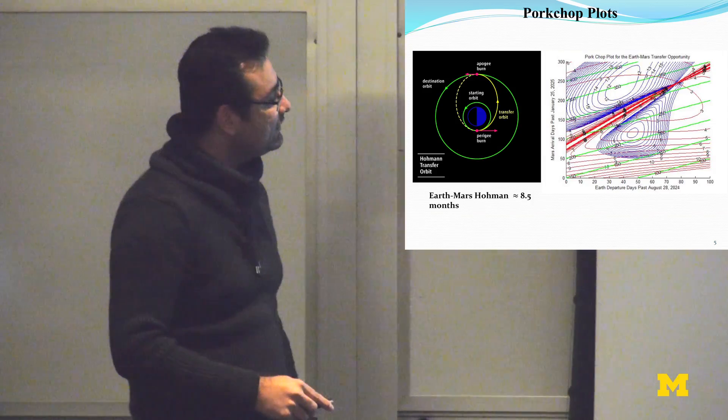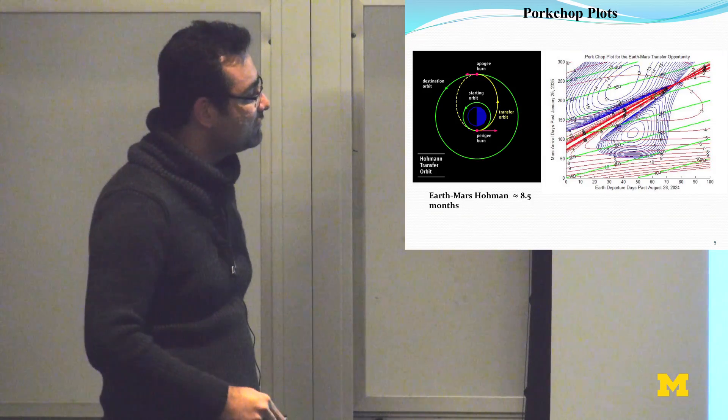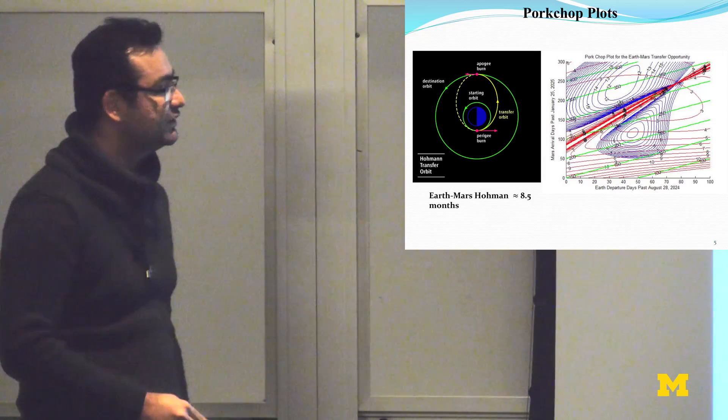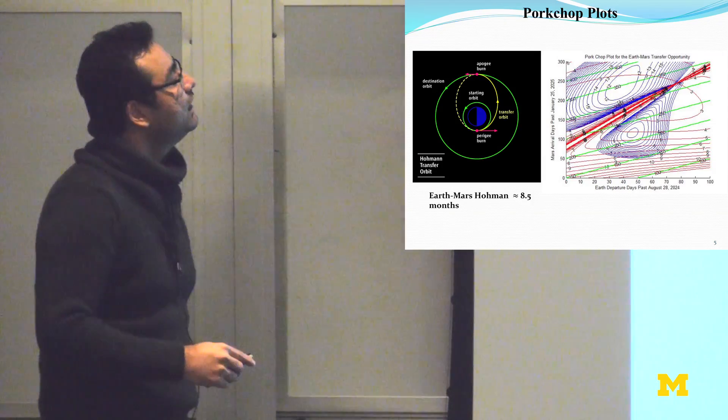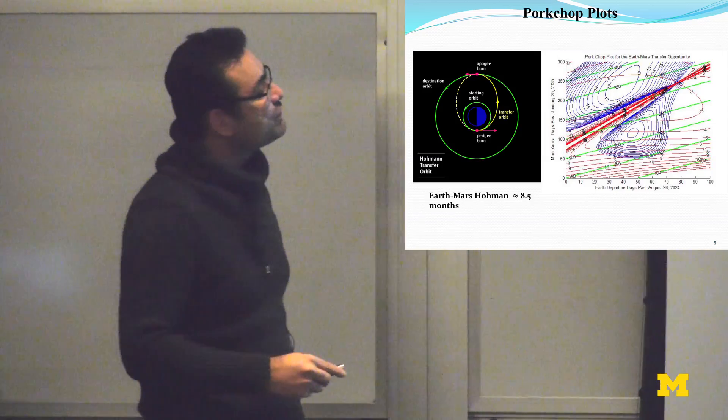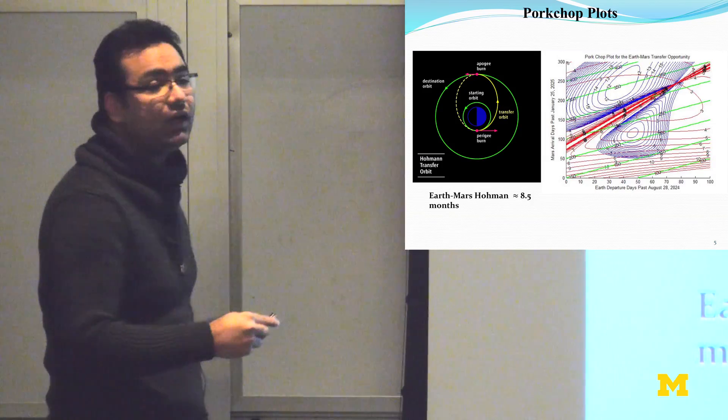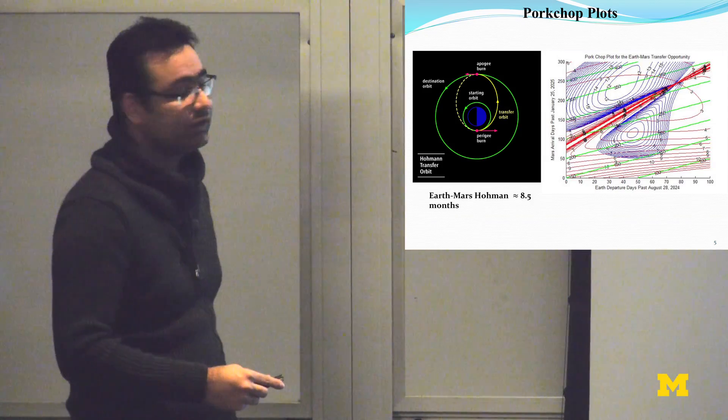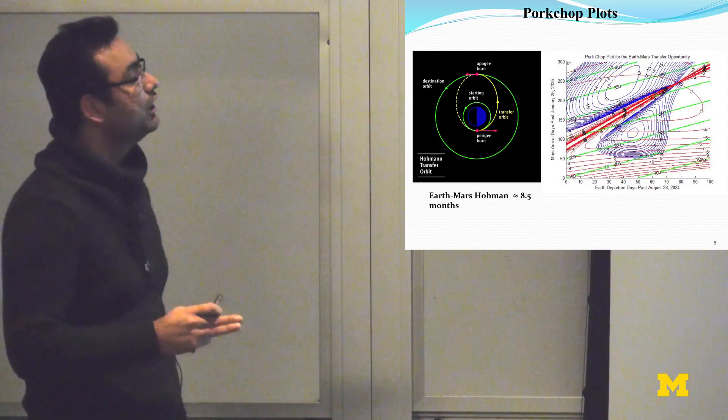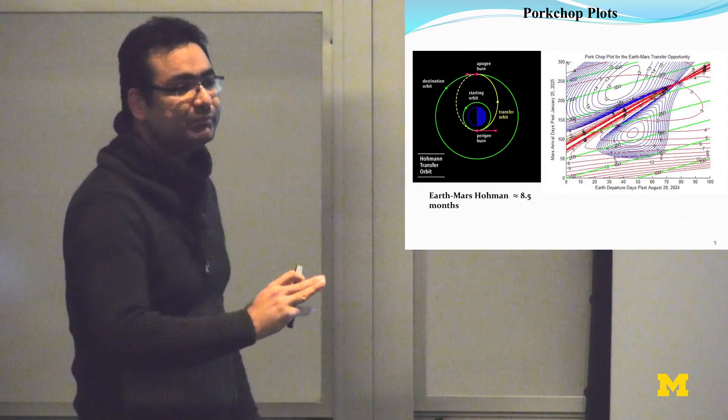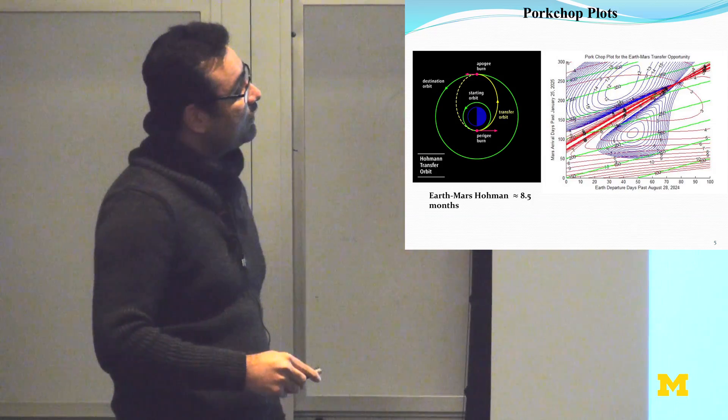However, the transfer time between Earth and Mars using a Hohmann transfer takes approximately 8.5 months. We have to wait for the correct time if we want to perform a maneuver. So they are fuel efficient, but they are using two impulses, and we have to wait for the correct phasing between Earth and Mars.